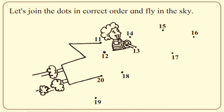Let's join the dots in correct order and fly in the sky. Here you can see a half picture and you have to join the numbers from 11 up to 20 in serial order. Then you will get one picture and you can fly in the sky.